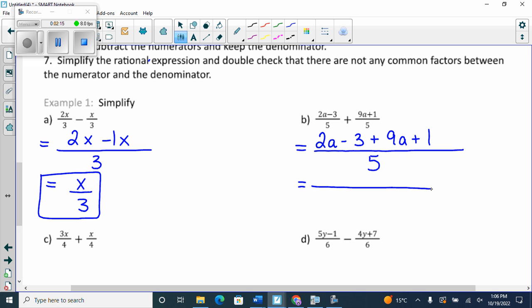So I have 2a plus 9a is 11a. And then negative 3 plus 1 is minus 2. I can't put them together because they are not like terms. That's as good as it gets. And what is it all over? 5.